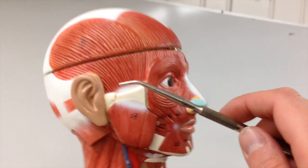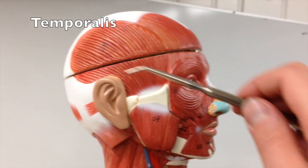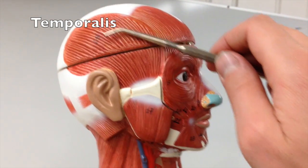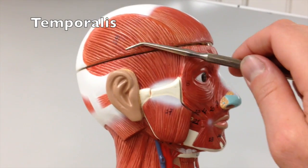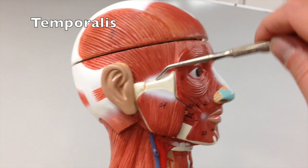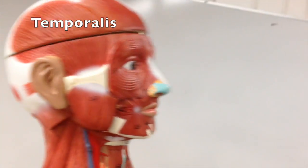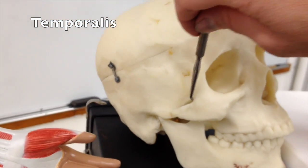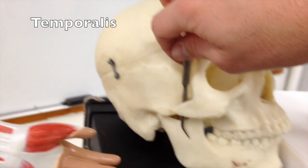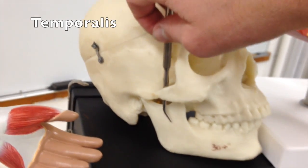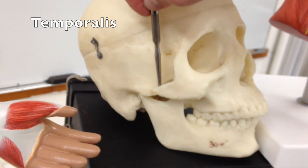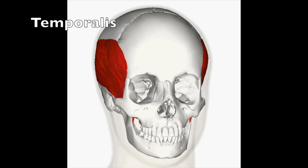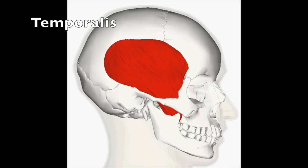One muscle that's important for chewing or mastication is the temporalis muscle. It's a fan-shaped muscle with its origin on the temporal bone, and its fibers run down behind the zygomatic arch and insert on the ramus of the mandible, as well as the coronoid process of the mandible. Its action is to raise the mandible or to pull it back — retract it.